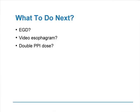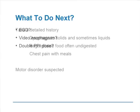She returns two months later and says she's not any better. What to do next? Is it an endoscopy, an x-ray, or should we double the PPI dose? None of the above. What to do next is to take a more detailed history, because this is not your classic GERD.